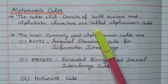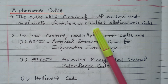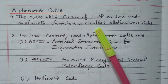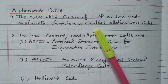In binary coded decimal, there are six types available: weighted binary code, non-weighted binary code, reflective code, sequential code, alphanumeric code, and error detecting and correcting code. Separate videos are available for all the types.